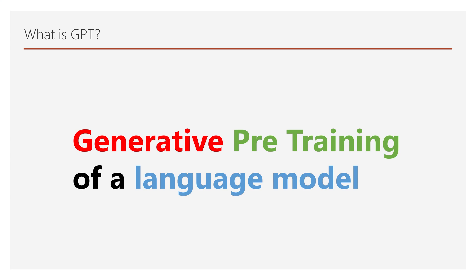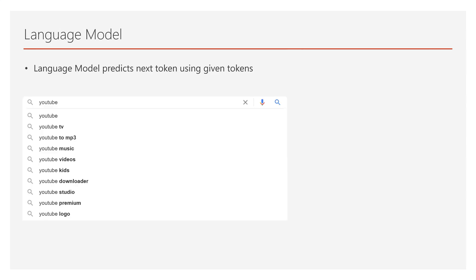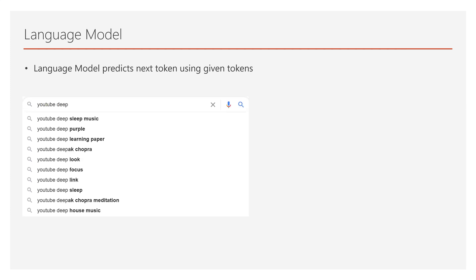GPT stands for Generative Pre-Training of a Language Model. In order to understand GPT, firstly you should understand how a language model is working. A language model predicts the next token using given tokens, just like next word suggestions in this slide.